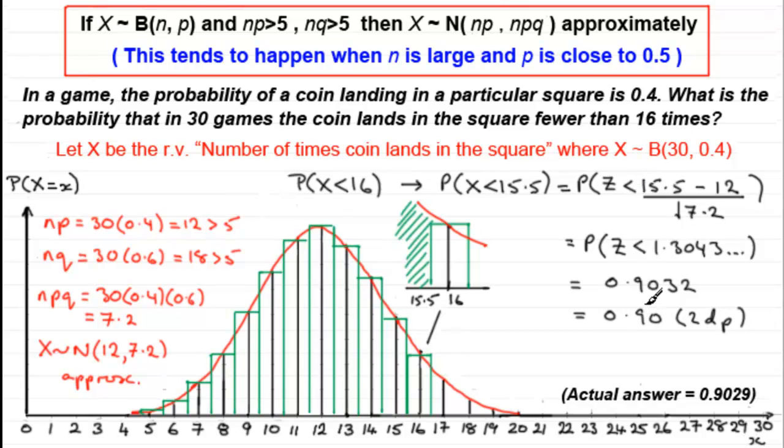And obviously if you're doing this question, you wouldn't need to draw as much detail as I've got here at all. But just check out that np is greater than 5, nq is greater than 5. Set up your normal distribution, your approximate normal distribution. Do your continuity correction and just use your tables to work out the corresponding probability. So I hope that's given you an idea. Don't forget, as I say, you can check out continuity corrections just by clicking on the link that you'll see down here.